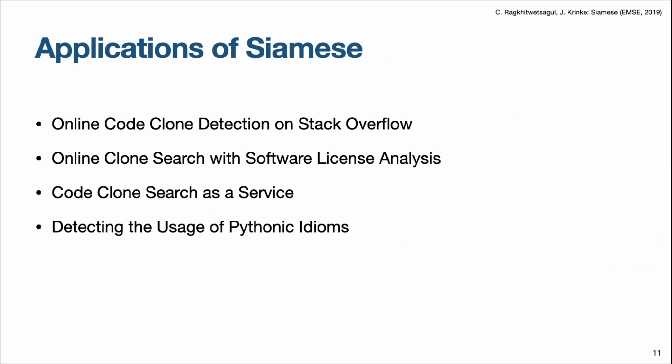Siamese can be applied to multiple tasks, such as online code clone detection on Stack Overflow, or to search for online code clones with software license analysis. Siamese can also be implemented as a code clone search service, and recently I have used it to detect the usage of Pythonic idioms.